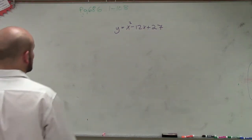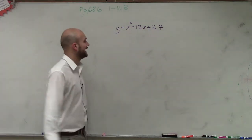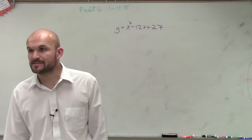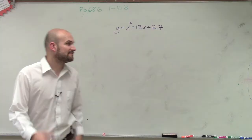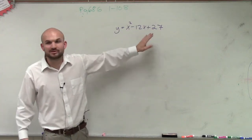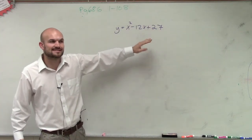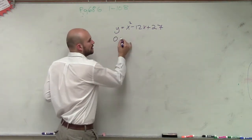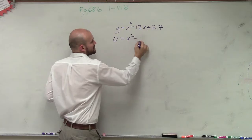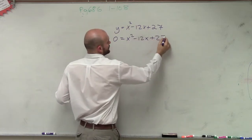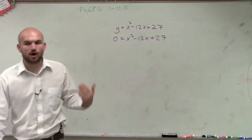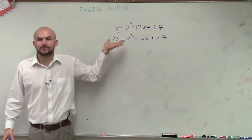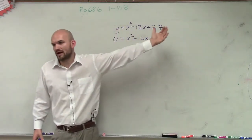So for this problem, what they're asking us to do is find the zeros. What that means by finding the zeros is we need to find when our value is going to equal zero — what values of x is our y-coordinate going to be zero? When is x going to make this equation equal to zero? So finding the zeros is pretty much saying when your y value is equal to zero, what are the values of x?